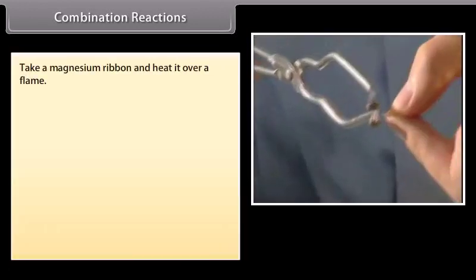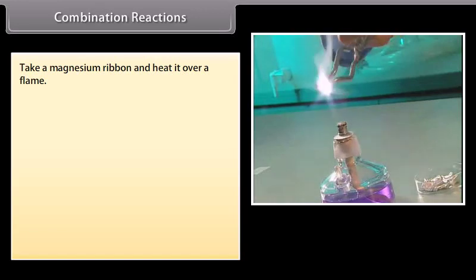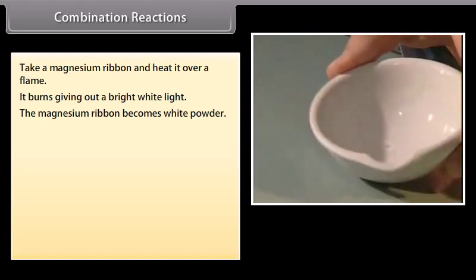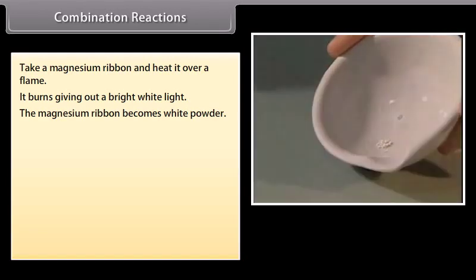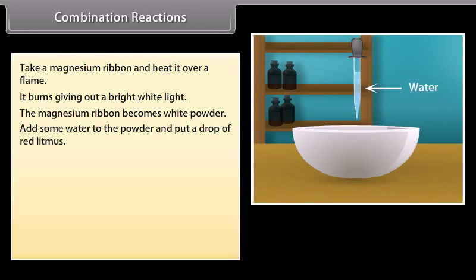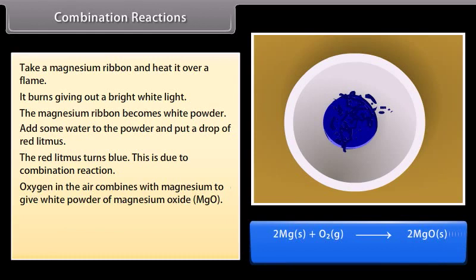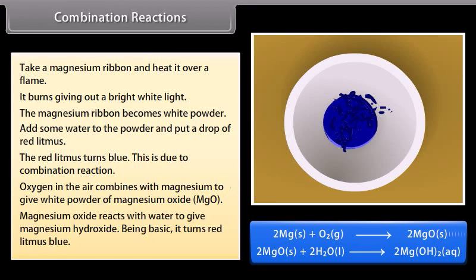Take a magnesium ribbon and heat it over a flame. It burns giving out a bright white light. The magnesium ribbon becomes white powder. Now add some water to the powder and put a drop of red litmus. The red litmus turns blue. This is due to combination reaction. Oxygen in the air combines with magnesium to give white powder of magnesium oxide. Magnesium oxide reacts with water to give magnesium hydroxide. Being basic, it turns red litmus blue.